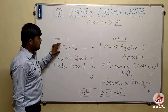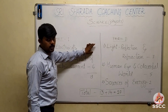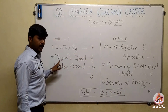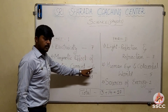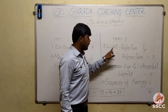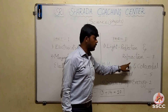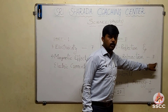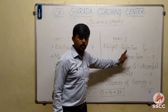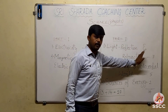For Electricity, you can expect seven marks. This is one of the most important chapters in Physics. In Magnetic Effect of Electric Current, six marks you can expect. In the part two textbook, in the Light Reflection and Refraction chapter, you can expect seven marks. In both parts, the first chapters are very important — Electricity for seven marks, and Light Reflection and Refraction for seven marks.